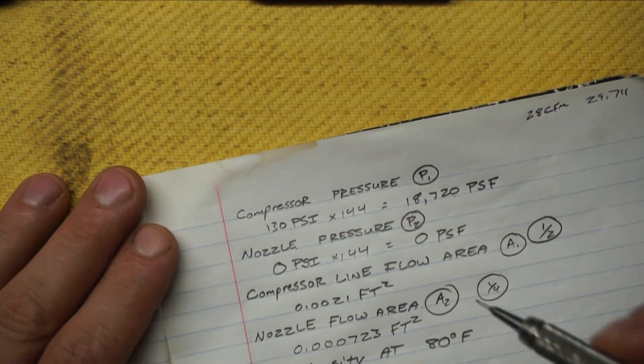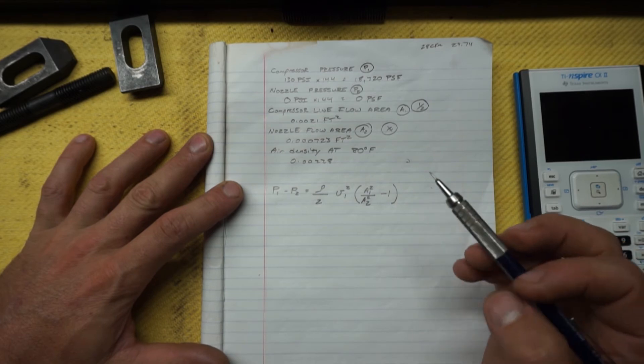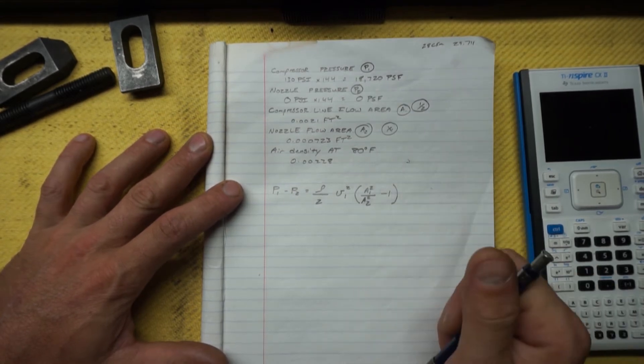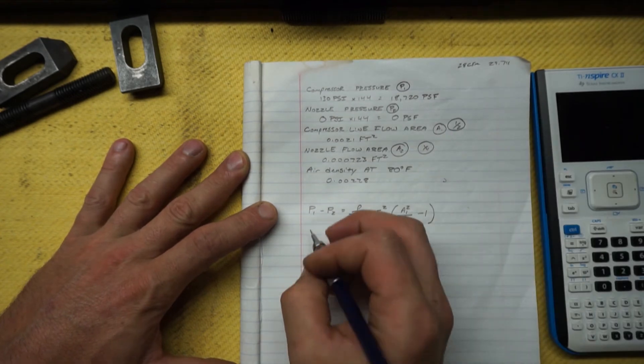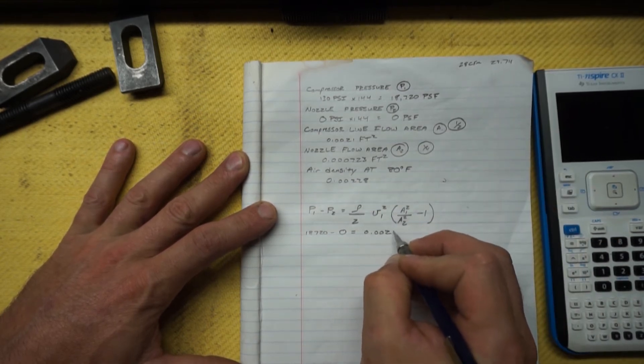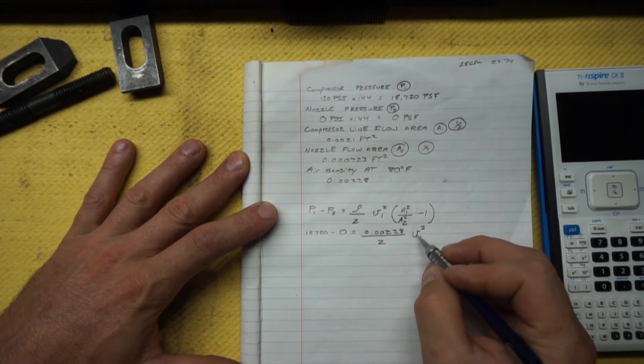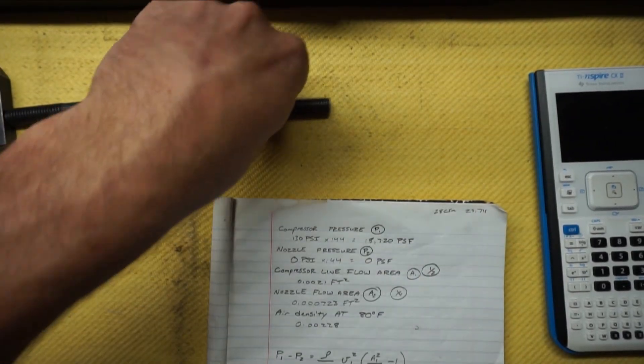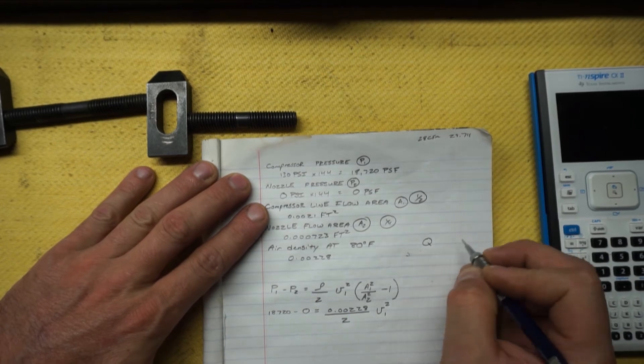So now we know we need to supply 130 PSI at all times to our nozzle, no matter what. How big should the air compressor be to supply at 80 degrees Fahrenheit, I need 130 PSI constantly in a wide open quarter inch pipe? Well that's where we start the math, and that's where this comes from. This is derived from Bernoulli's equation. We just start filling it in. PSF: 18,720 minus zero equals the density we found, 0.00228, over 2, v squared one. This is the velocity of the air at the compressor.